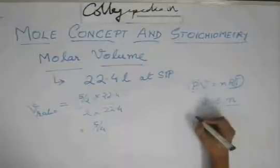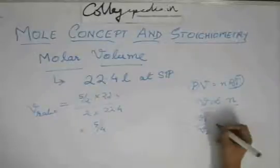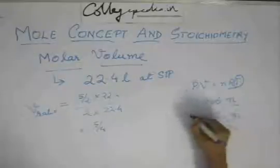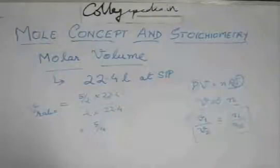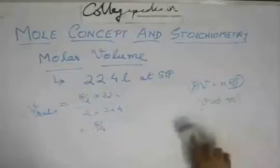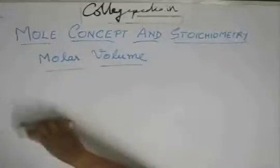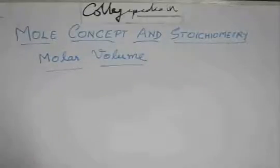So the change in n will directly result in a change in V. So that is why for any gas the volume would be proportional to its number of moles. So if we are asked to find the ratio of volumes of two gases that would be equal to the ratio of the number of moles, if temperature and pressure are constant.